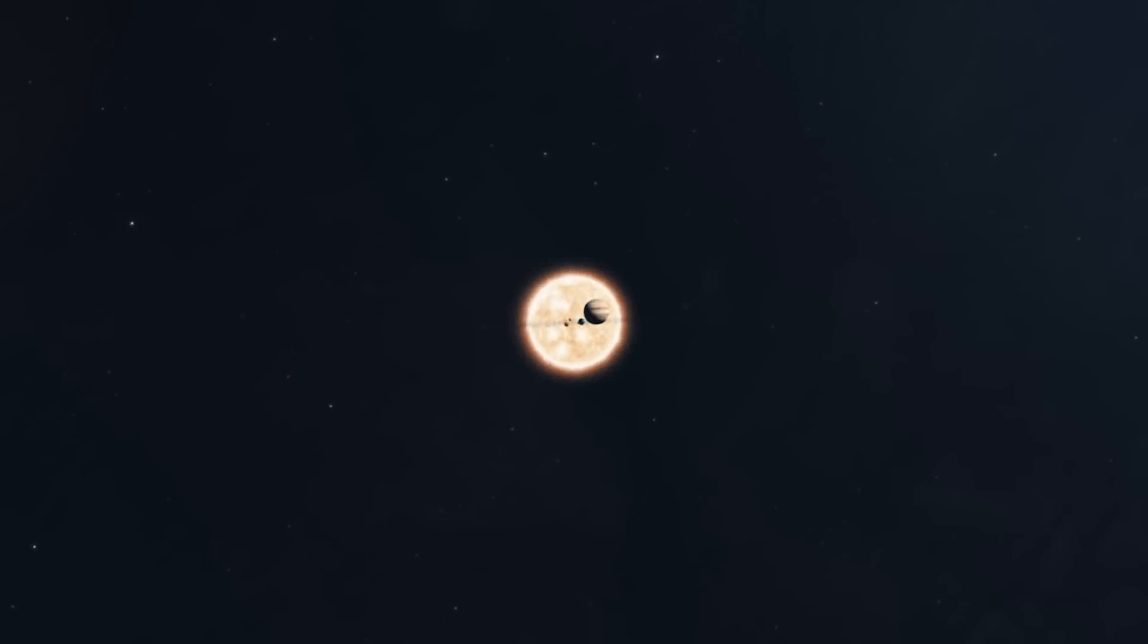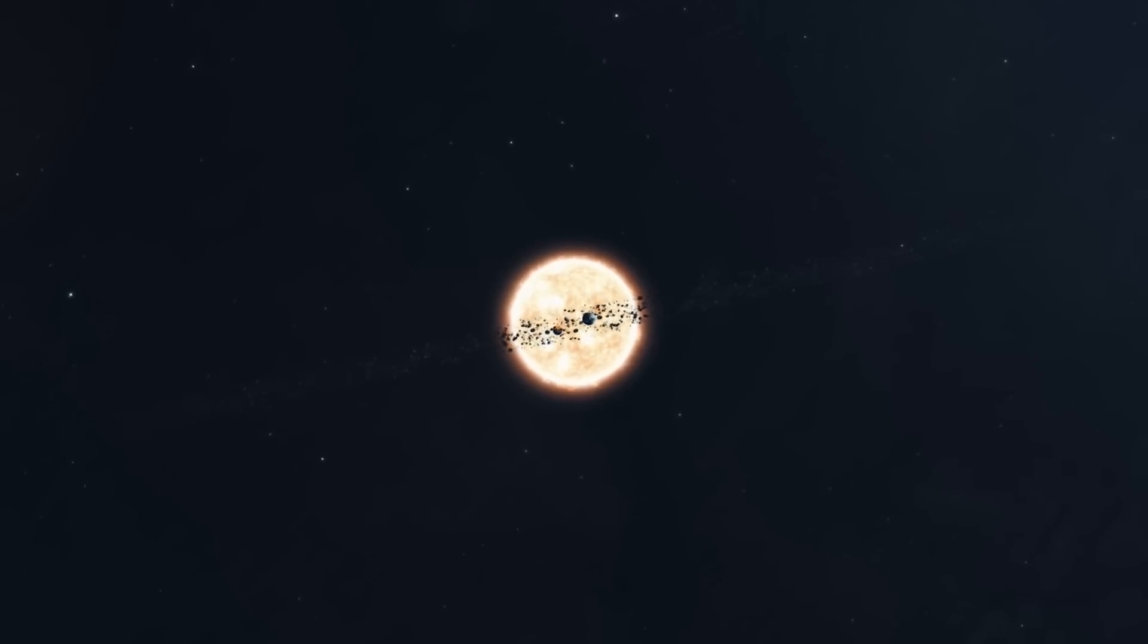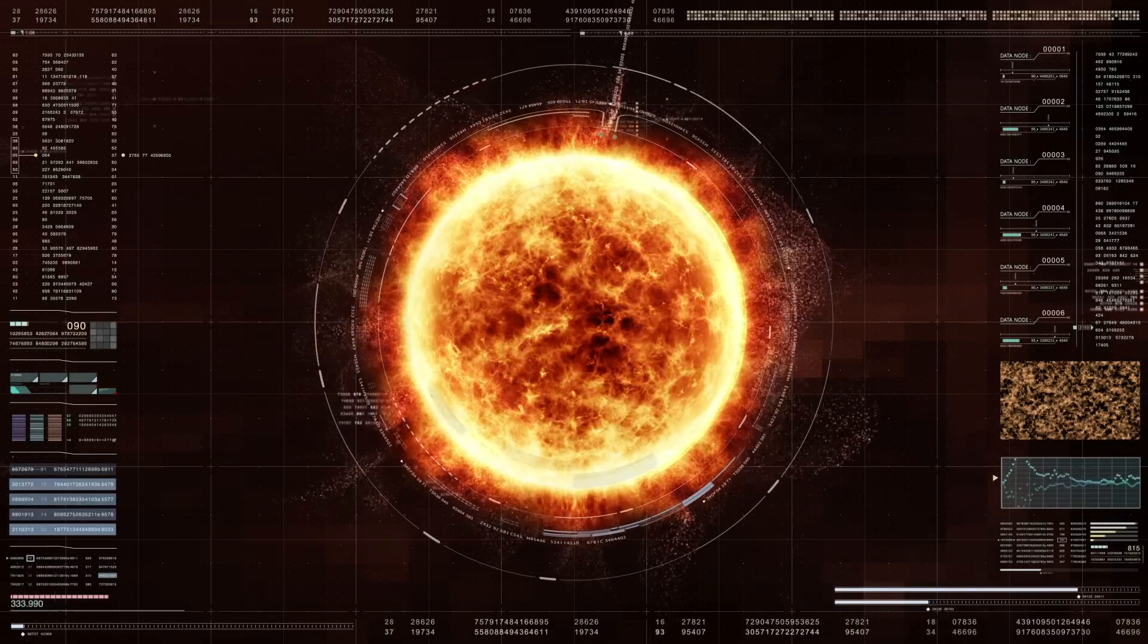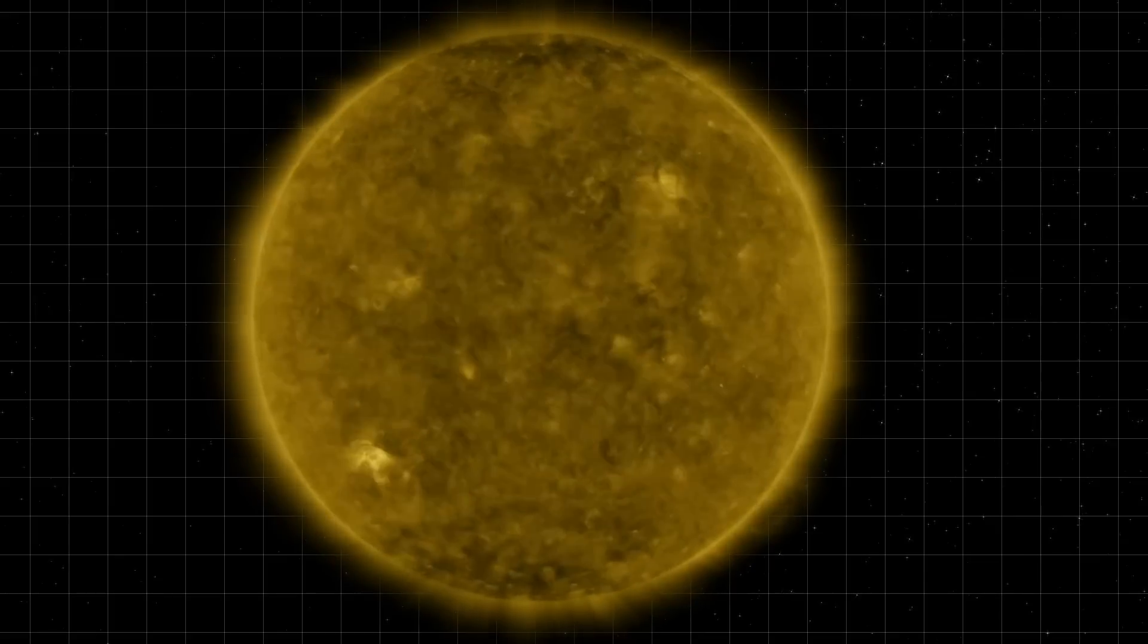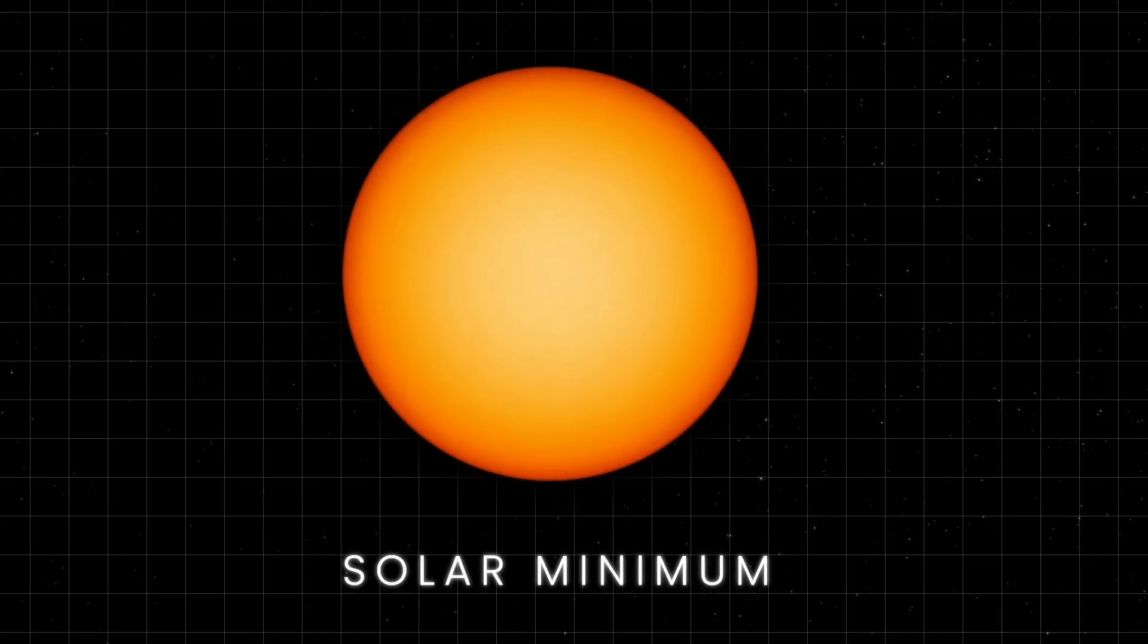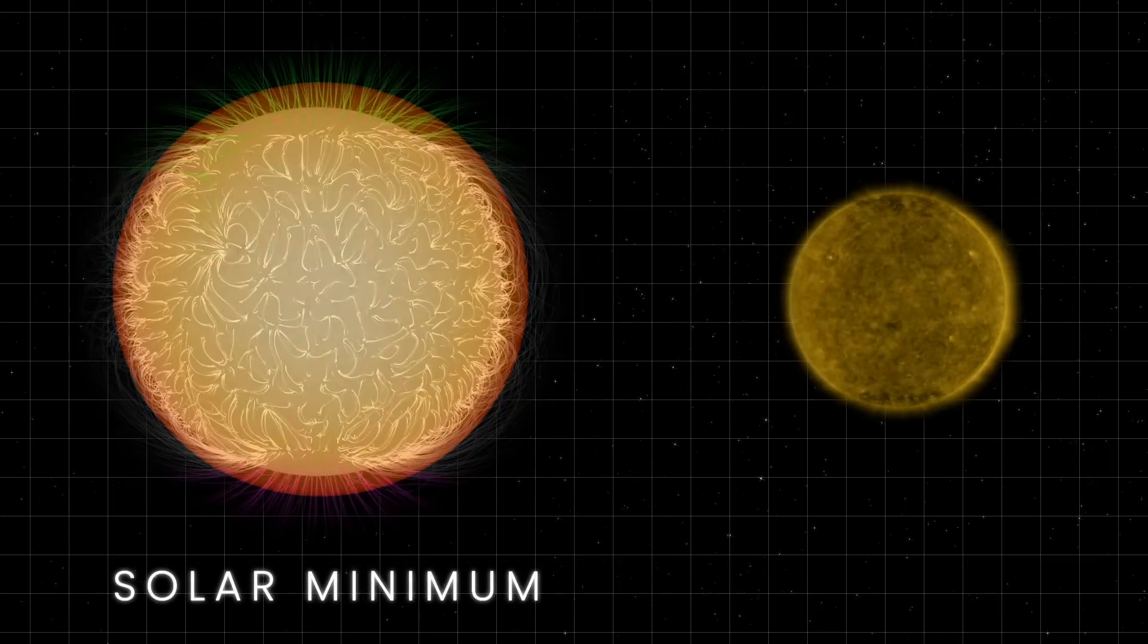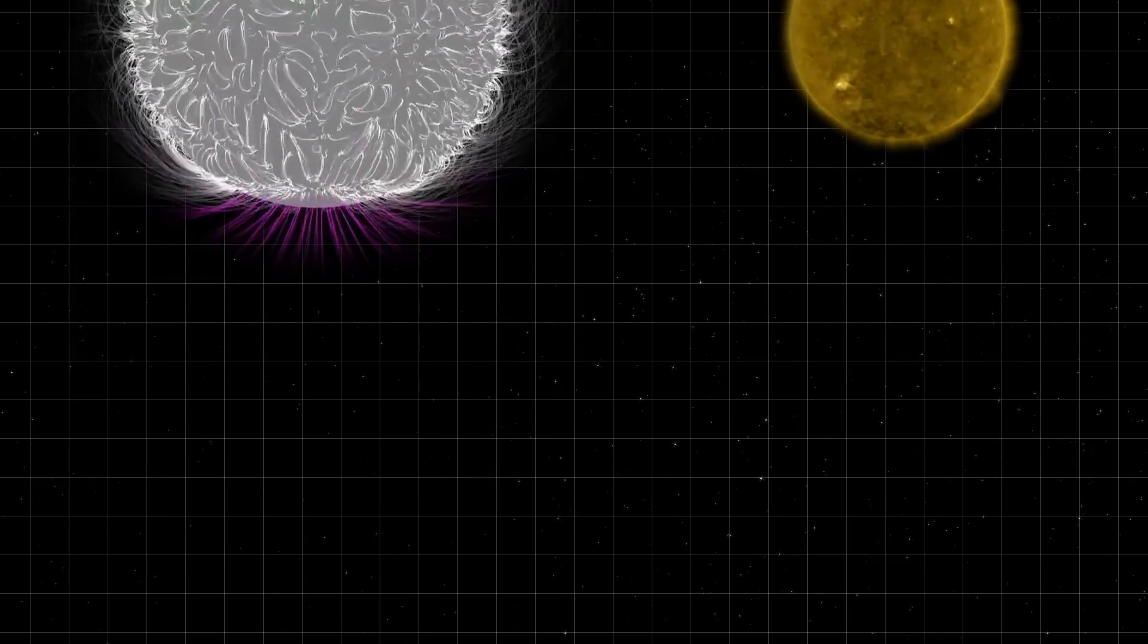The solar cycle is an approximately 11-year cycle during which the Sun's magnetic field goes through a series of changes, culminating in a reversal of its polarity. This cycle is driven by the solar dynamo and involves several stages. At the beginning of the solar cycle, the Sun is in a state of solar minimum, characterized by a low number of sunspots and minimal solar activity. The magnetic field is relatively simple and bipolar, with a clear north and south magnetic pole.